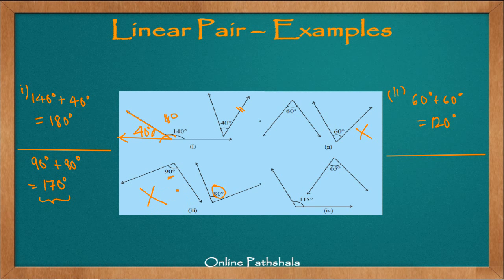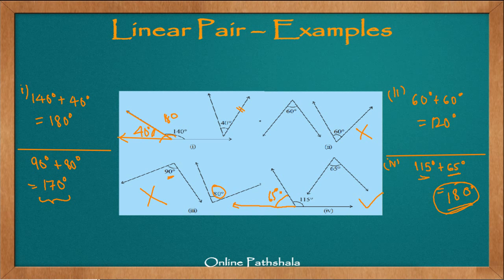In the fourth example, we have 115 degrees plus 65 degrees — one obtuse and one acute. Adding them gives 180 degrees. Therefore, when placing these two angles adjacent to each other, we will get two opposite rays. Drawing a straight line, this angle would be 65 degrees. This is a linear pair. That was our discussion about linear pair.